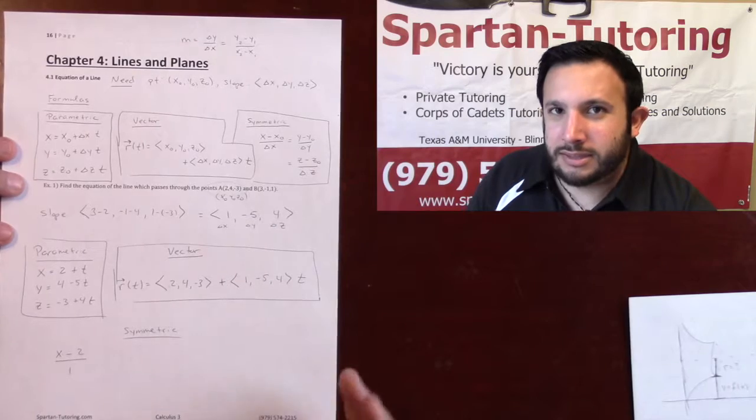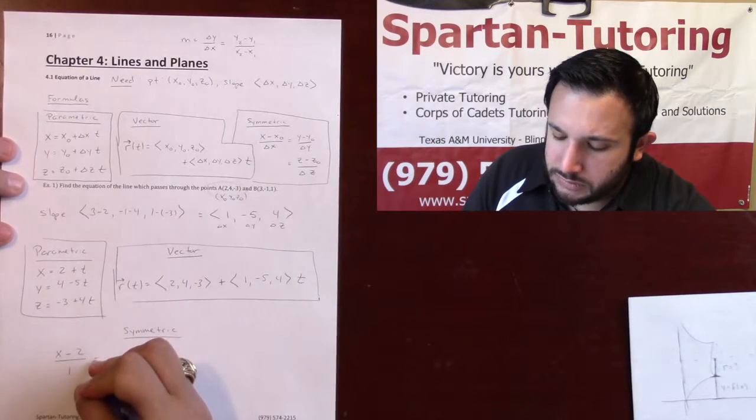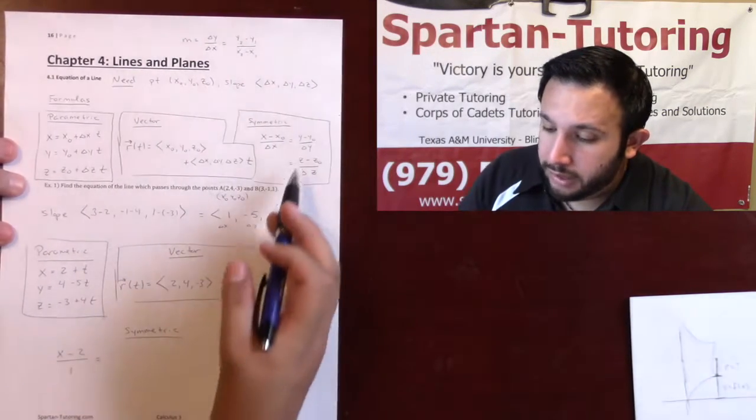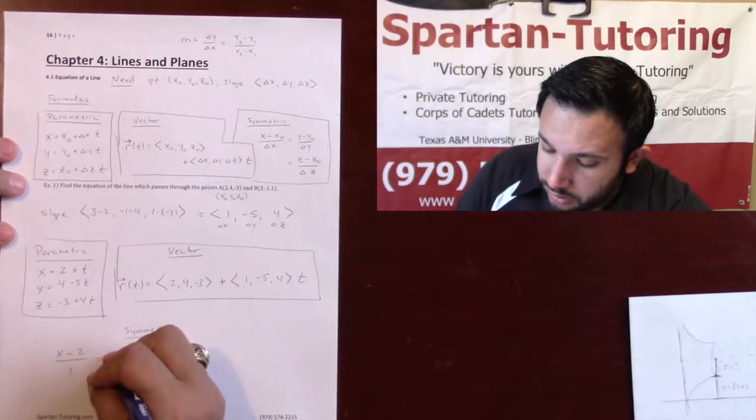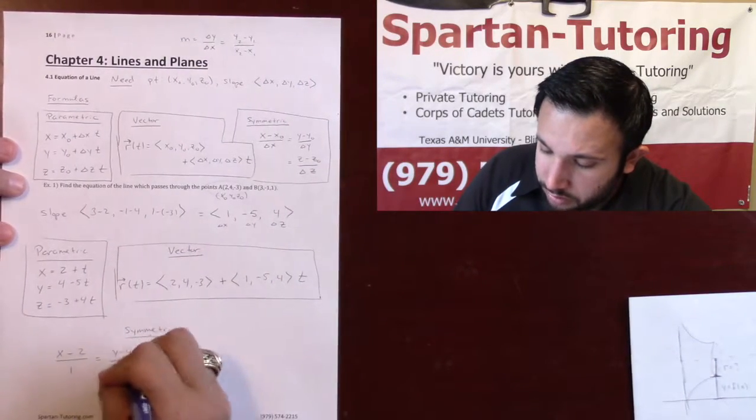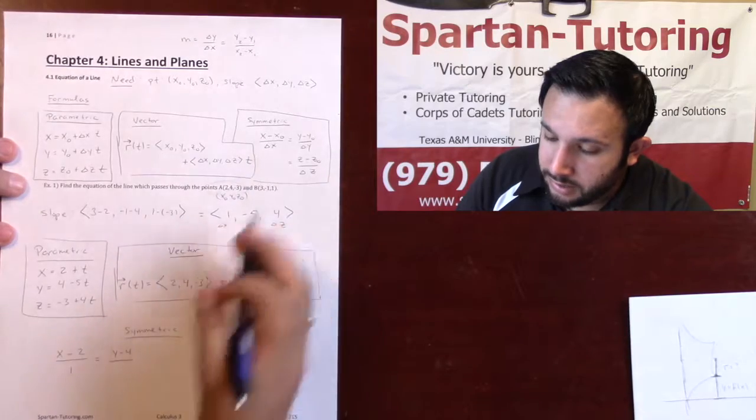because anything divided by 1 is itself, to his own. So, then y, y minus y naught, so y minus 4, divided by delta y, so it's negative 5